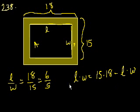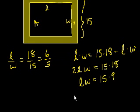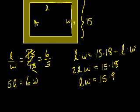So minus L times W. If we add LW to both sides, we get 2LW equals 15 times 18. Let's divide both sides by 2, so you get LW equals 15 times 9. We have two equations with two unknowns. We have L over W equals 6 over 5. We can cross multiply, so we get 5L equals 6W. So we get 5 over 6L equals W.